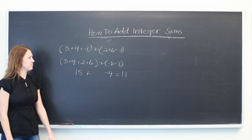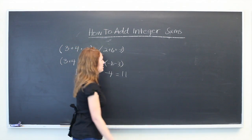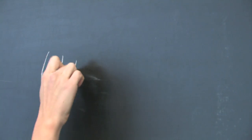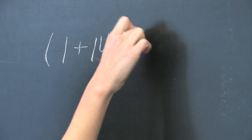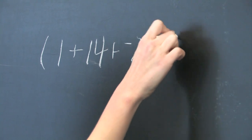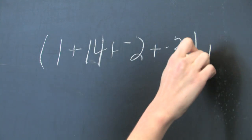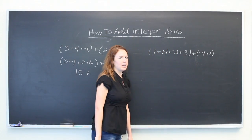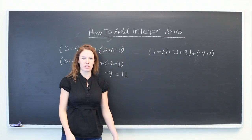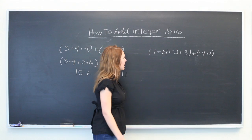Let's try another one with the same method. We'll do 1+14+(-2)+(-3)+(-4)+1. Again, the first step is to group all the positives and all the negatives together.